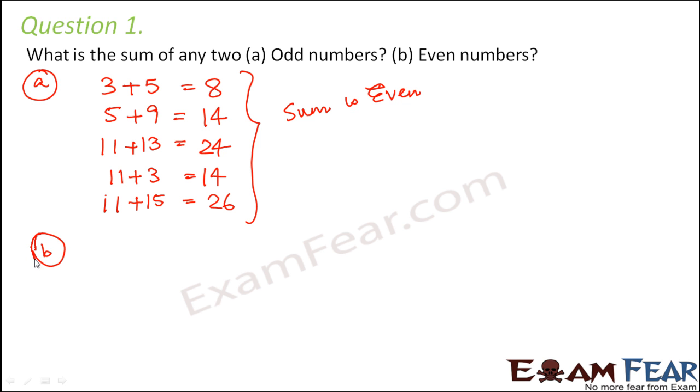In the second case, we are asked to add two even numbers. So let's see what happens with even numbers. For example, 2 plus 6 gives 8. 12 plus 4 gives 16. 26 plus 2 gives 28. So in case of even numbers also, the sum is even. So whether you add two odd numbers or you add two even numbers, the sum would always be even.